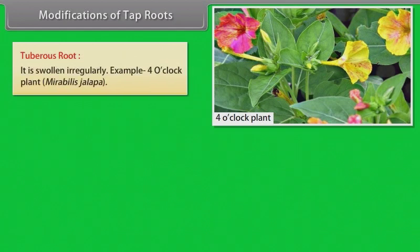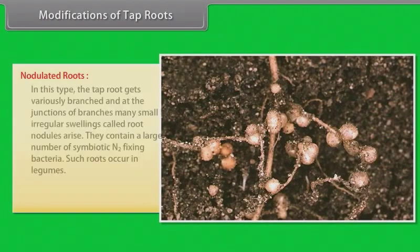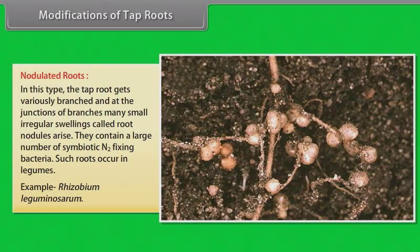Tuberous root: swollen irregularly. Example: four o'clock plant (Mirabilis jalapa). Branched tap root: Sometimes the tap root gets branched and the branches modify to perform various functions. Nodulated roots: The tap root gets variously branched and at the junction of branches, many small irregular swellings called root nodules arise. They contain a large number of symbiotic nitrogen-fixing bacteria. Such roots occur in legumes. Example: Rhizobium leguminosarum.